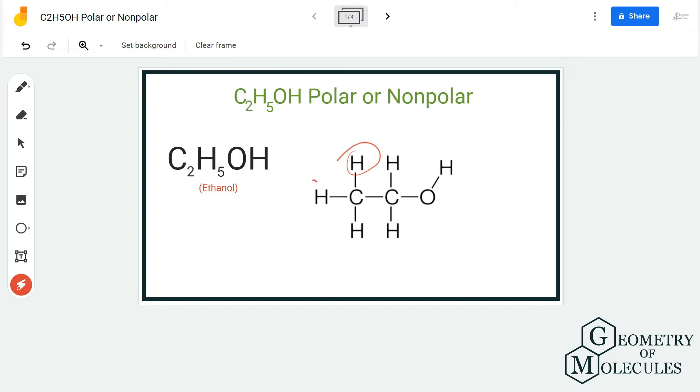Now OH represents the group for alcohol; it's a functional group. When you look at this Lewis structure, you can see here this arrangement is quite asymmetric, and generally the molecules that have asymmetric arrangement of atoms are polar.